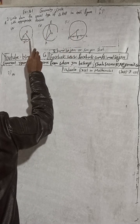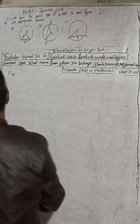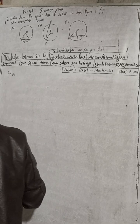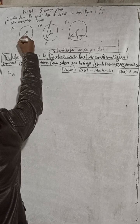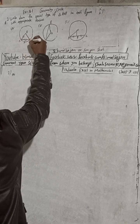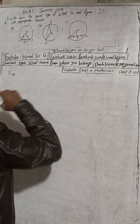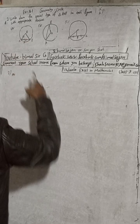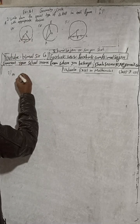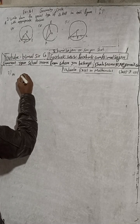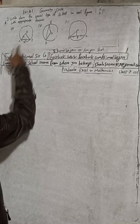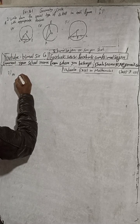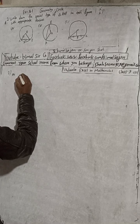There are three figures and we have to write the name of the triangle AOB in each figure. Draw each figure and write the special type of triangle with the appropriate reason.